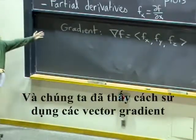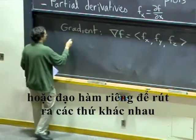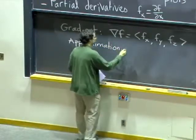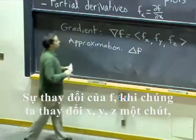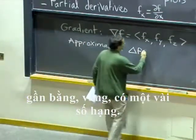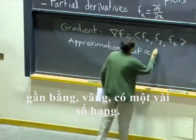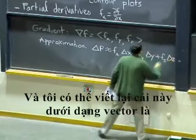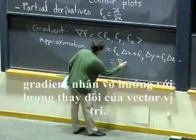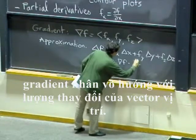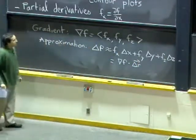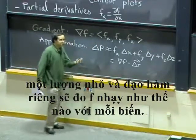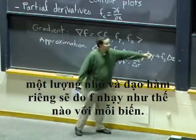We've seen how to use the gradient vector and partial derivatives to derive various things, such as approximation formulas. The change in f when we change x, y and z slightly is approximately equal to several terms, and I can rewrite this in vector form as the gradient dot product with the amount by which the position vector has changed. Basically, what causes f to change is changing x, y and z by small amounts, and how sensitive f is to each variable is precisely what the partial derivatives measure.